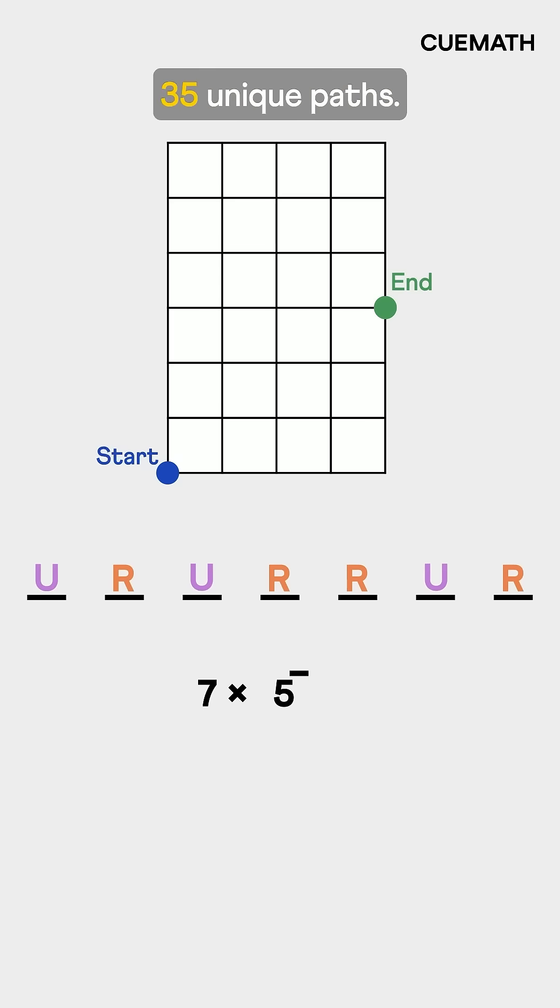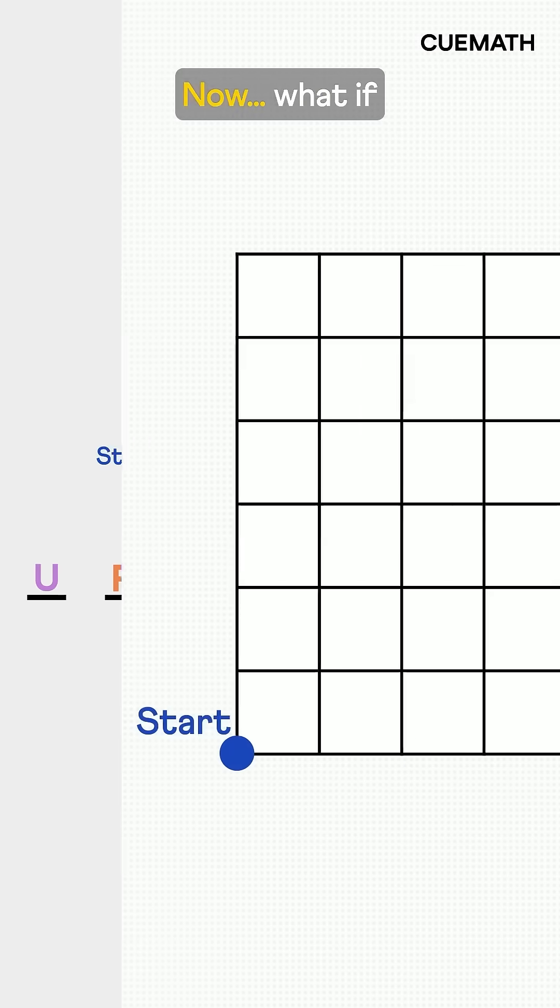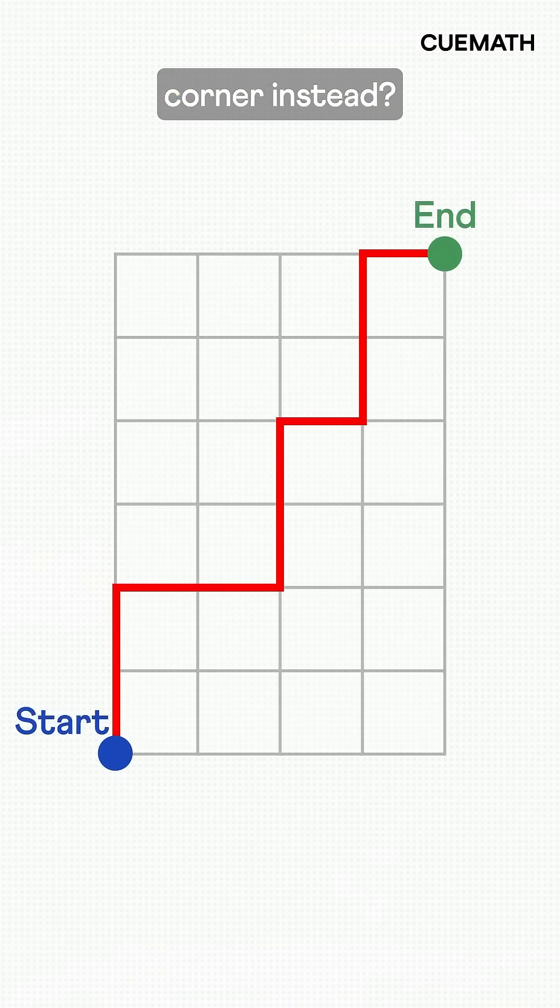So that leaves us with a total of 35 unique paths. Now, what if the destination was the top right corner instead? How many different paths do we have to get there?